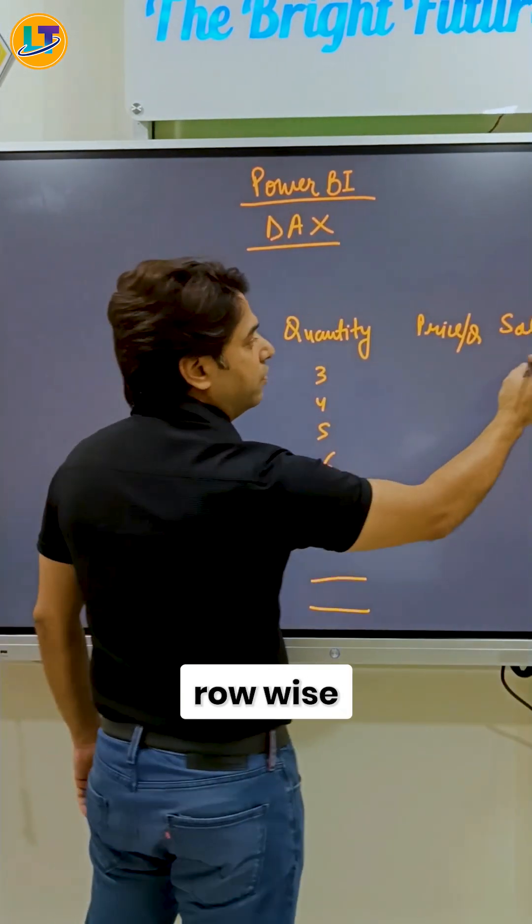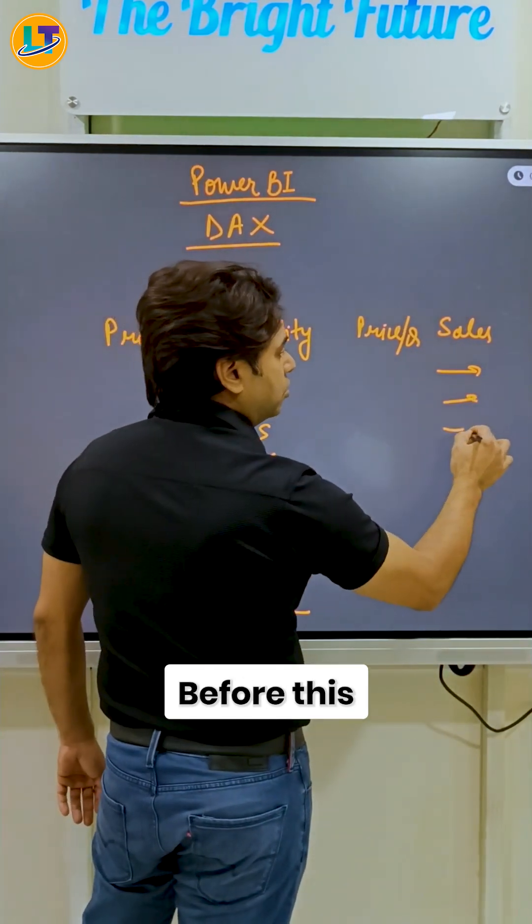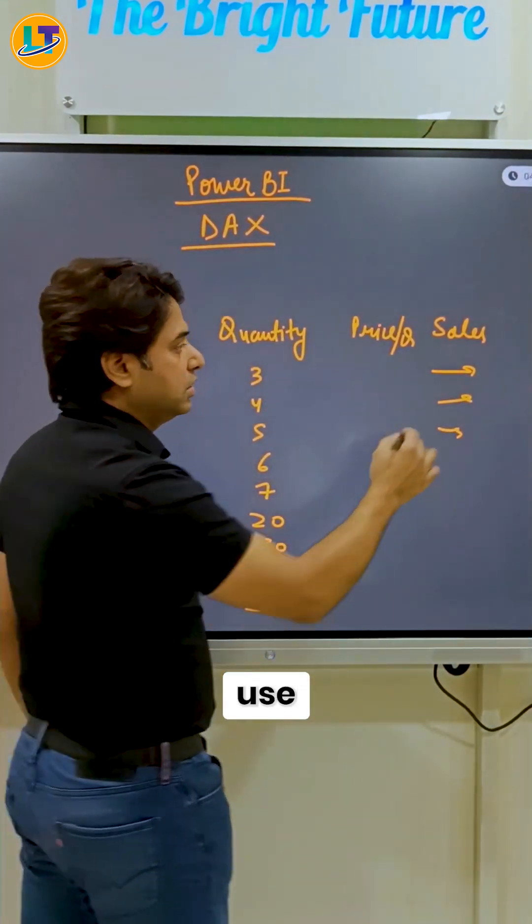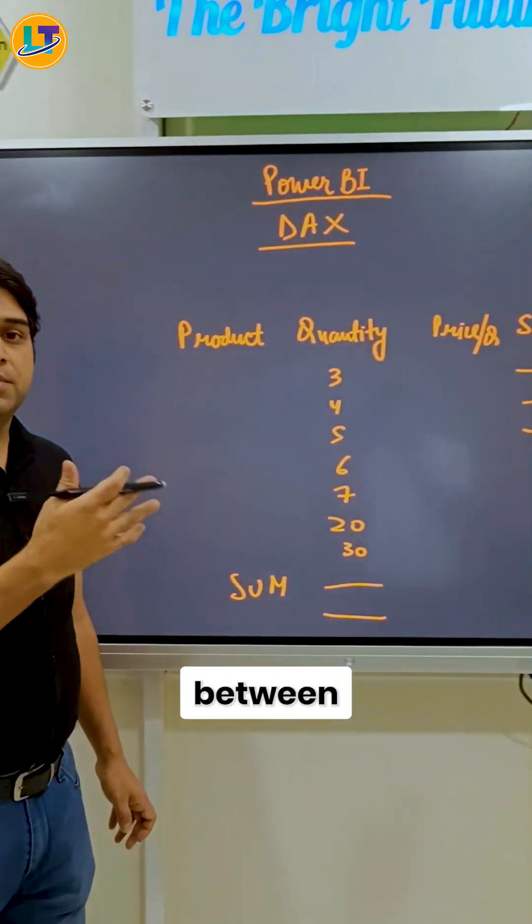We have to do some calculation row-wise where we want like a total sales of a particular product, right, for each row. So for this kind of situation, we will use SUMX. Right? So this is the difference between SUM and SUMX.